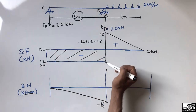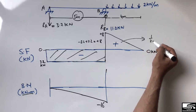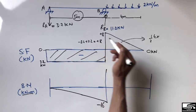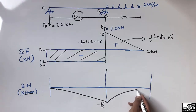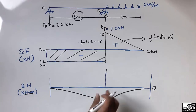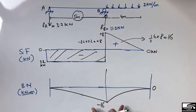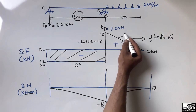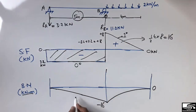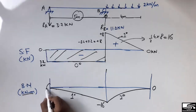The second portion is a triangle acting in the upward direction, so the bending moment is positive. The area of the triangle is ½ × 4 × 8 = 16. Adding −16 and +16 gives 0, confirming the bending moment returns to zero at the free end. Remember: the shear force is zero-degree (constant), so the bending moment is first-degree (linear); where shear force is first-degree (linear), the bending moment is second-degree (parabolic/quadratic).